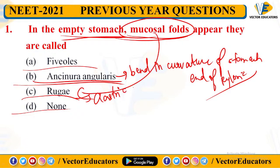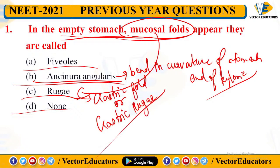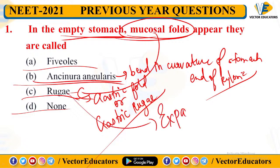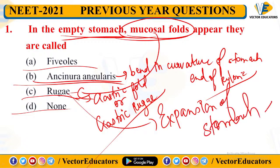We can also call them gastric rugae. So in the empty stomach, mucosal folds are called rugae. Their function is expansion of the stomach — so that when food or liquid enters the stomach, maximum expansion occurs and maximum absorption of food or liquid can take place. So the correct answer is rugae.